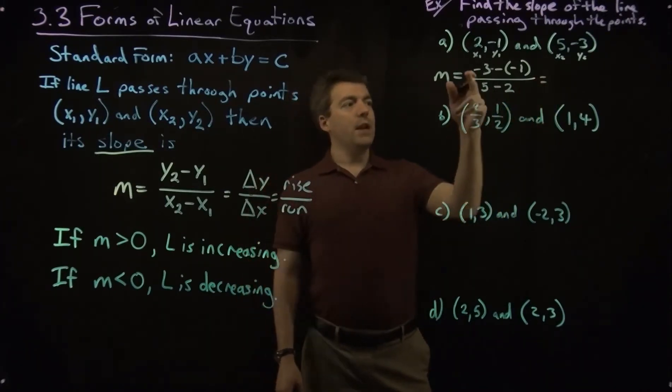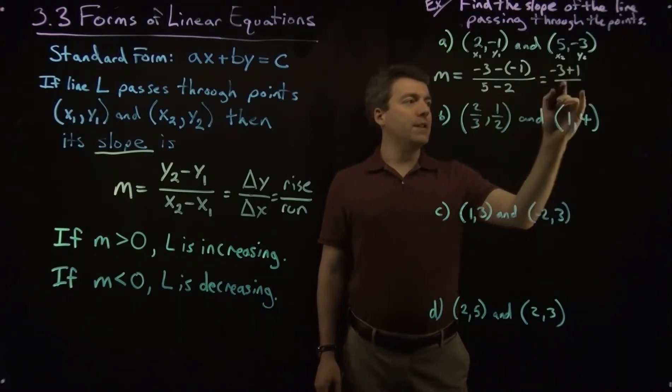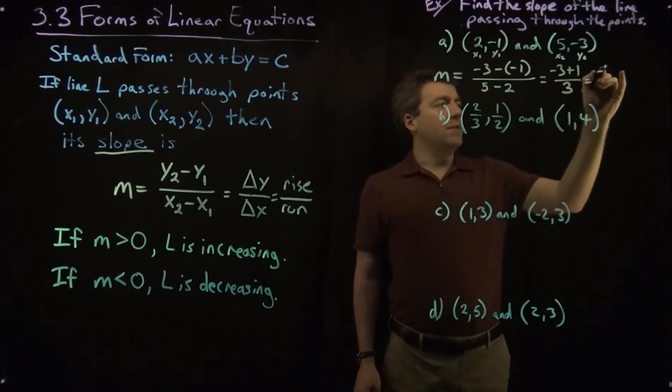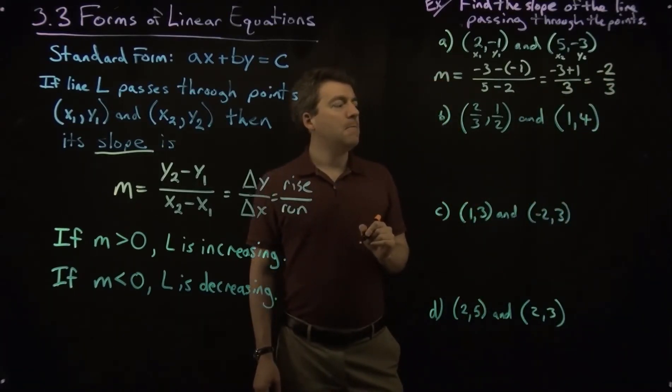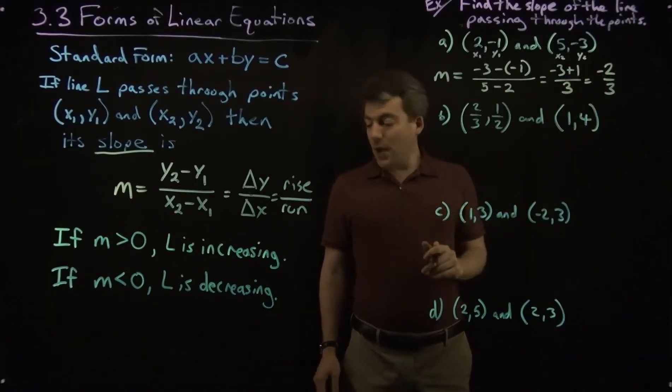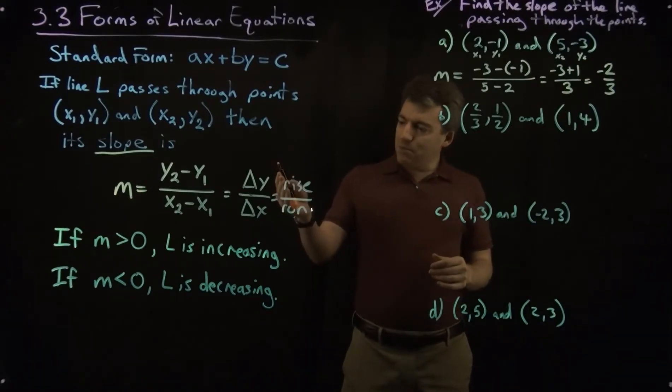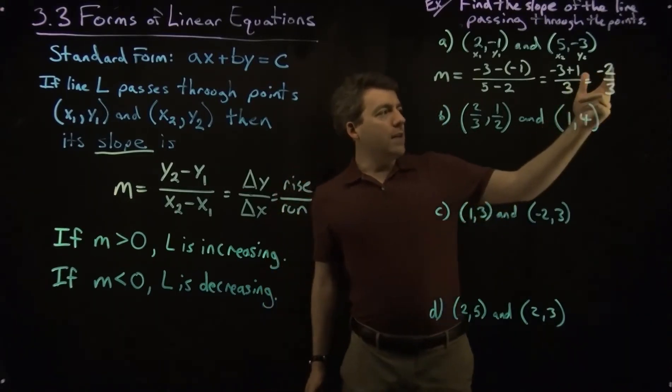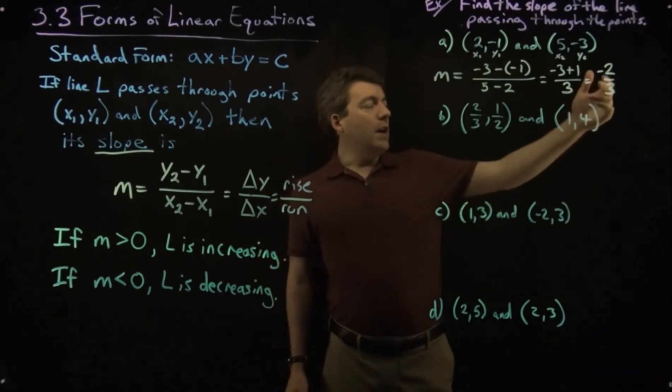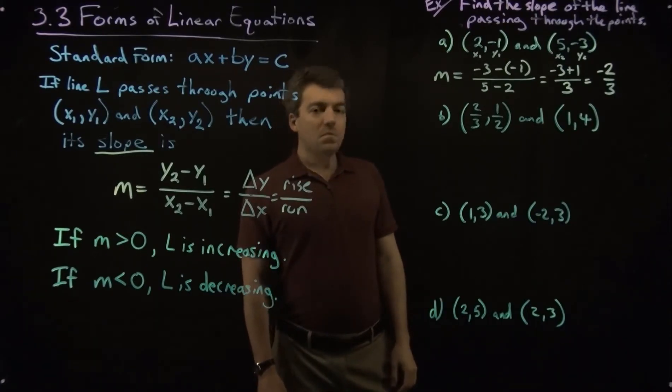All right, and then we just simplify this. So negative 3, minus negative 1, is negative 3, plus 1, over 5, minus 2, is 3. And then negative 3, plus 1, is negative 2, so negative 2 thirds. All right. So this particular slope is negative, first off, so we know that the line is decreasing. So if we were to plot this, the line would be decreasing. Another thing we can say is, since it measures the rise over the run, we know that this graph is going to fall 2 units for every run of 3 units in the x direction. Or, it could rise 2 units for every move of negative 3 in the x direction.